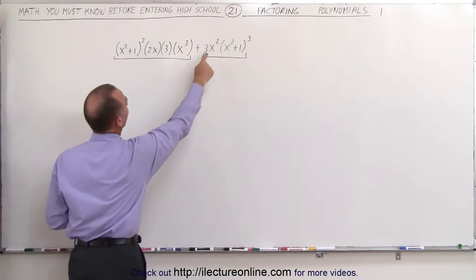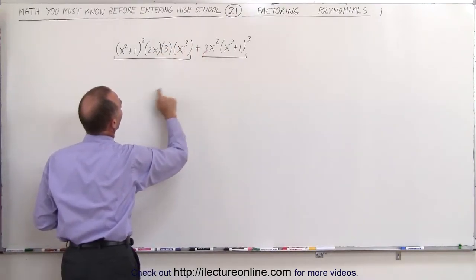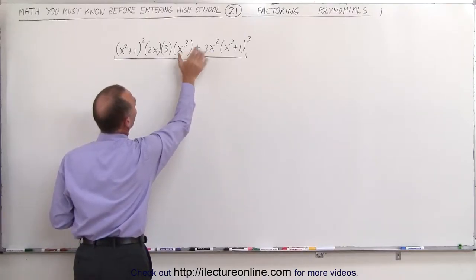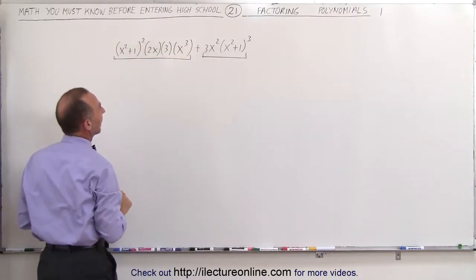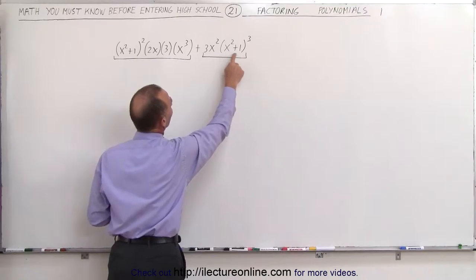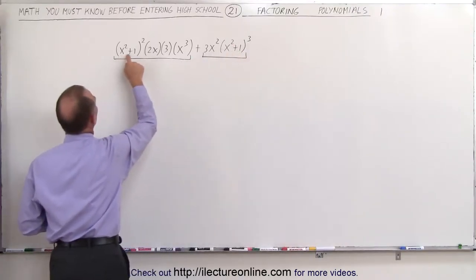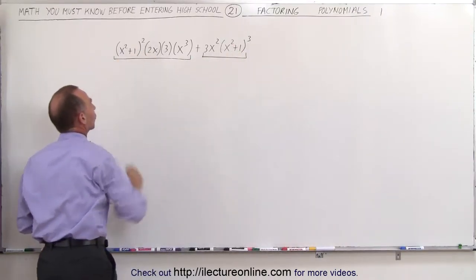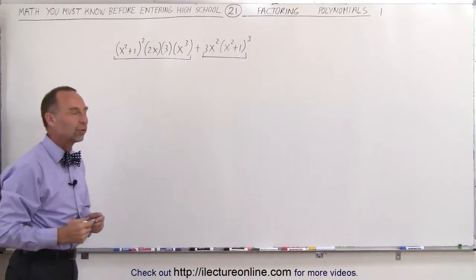Now I see a 3 here and I see a 3 here so that can be factored out. I see an x squared and x cubed so an x squared can be factored out, and then I see a quantity x squared plus 1 cubed and x squared plus 1 squared, so x squared plus 1 squared can be factored out as well.